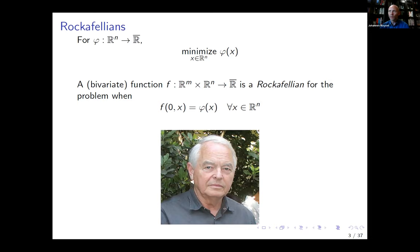Rockefeller himself didn't call these Rockefellian functions — that would have been unusual for a young PhD student. He called it a perturbation function and sometimes the bifunction. If you look in the Convex Analysis book from 1970, he called it the bifunctions. But whatever we call it, let's call it a Rockefellian in this talk and see what it can do for us.